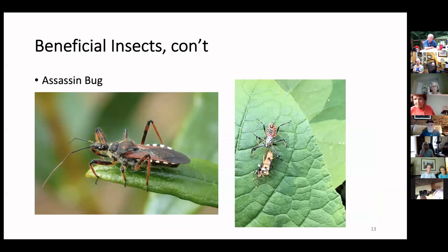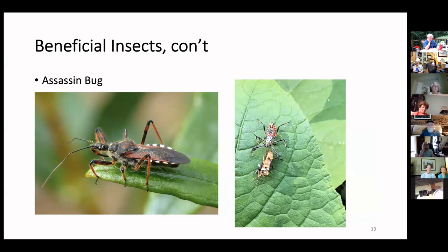This is an assassin bug — he's got a stink bug there, which is a nasty pest. Assassin bugs hide and ambush; they have a proboscis they use to inject digestive juices and then suck out the insides of other insects. Next are soldier beetles — they hunt and eat other insects. And here's a praying mantis — they'll eat anything, including each other.